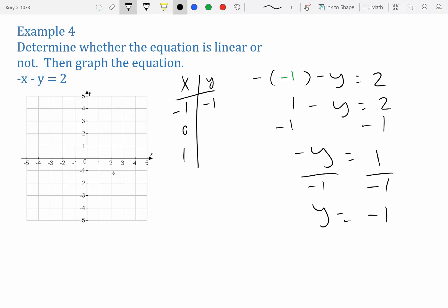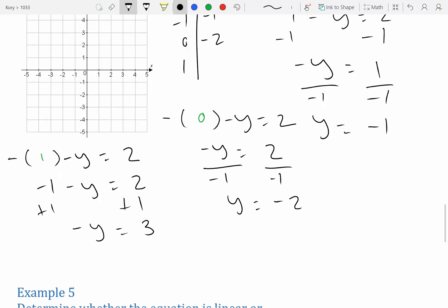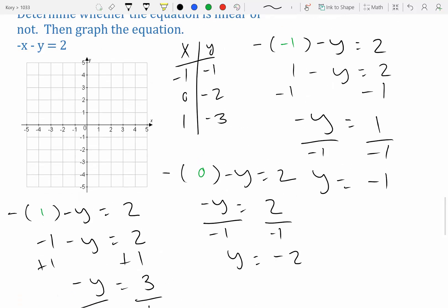Next, we're going to put 0 in. So we have negative x, which is 0, minus y equals 2. Negative 0 is just 0. So we have negative y equals 2. Divide out the negative. So we have y equals negative 2. Now, we're going to repeat the process again with positive 1. So we have negative x, which is positive 1, minus y equals 2. We have negative 1 minus y equals 2. Add 1 to both sides. We have negative y equals 3. Divide out the negative. We have y equals negative 3. Now that we have three points, we can go ahead and plot them and create this graph.